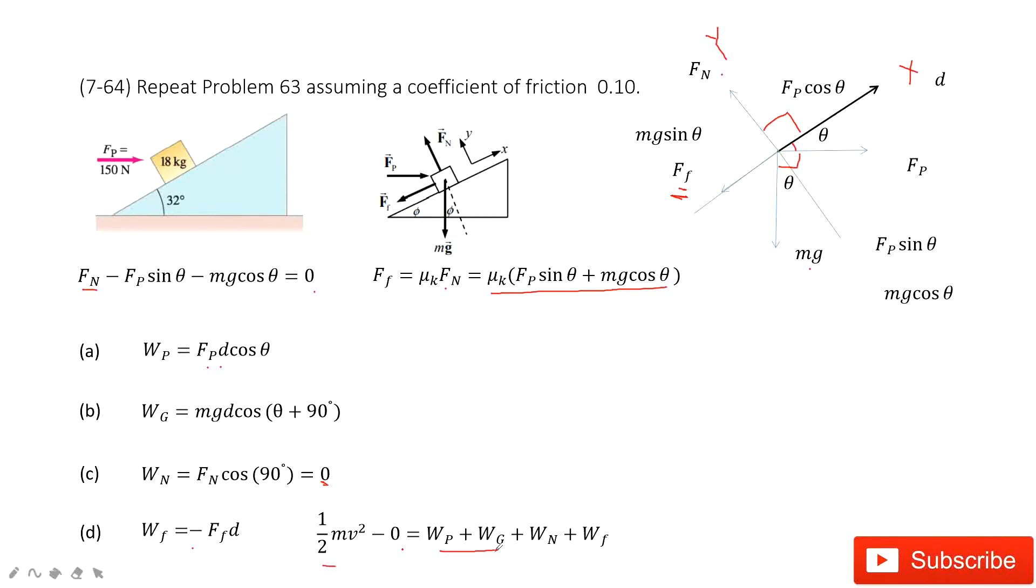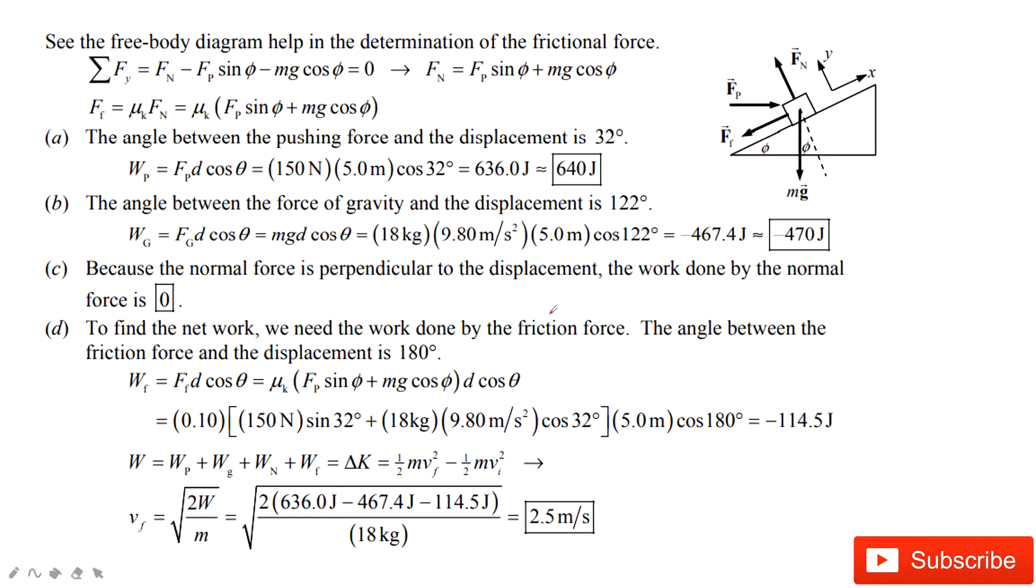And then we get the equation there. So the net work, we need to include Wp, Wg, Wn, and Wf. Now, after you input all the numbers inside, you get the final answer. Thank you.